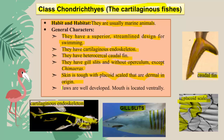Jaws are well developed and the mouth is located on the ventral side, i.e., on the lower side. I will continue the remaining characters of Chondrichthyes in the next video, including showing exactly where the mouth is located in members of Chondrichthyes.